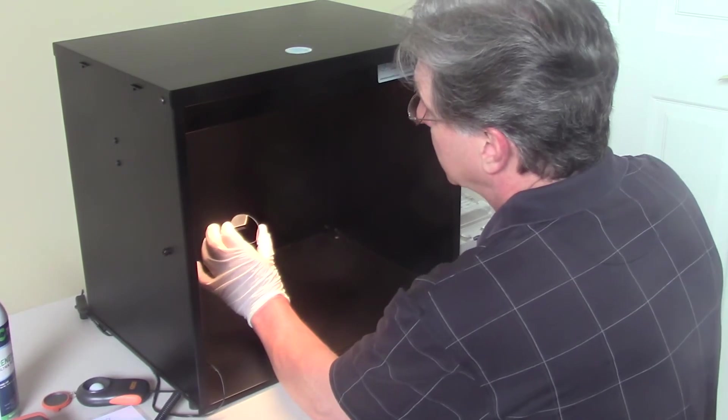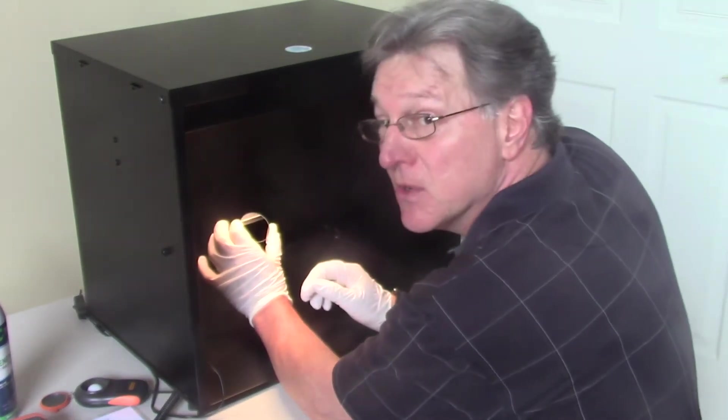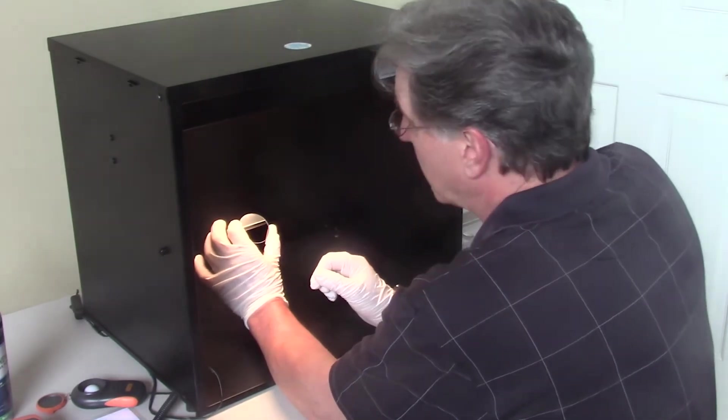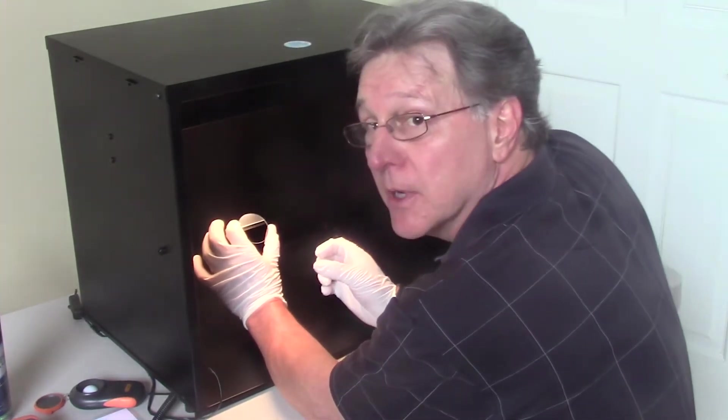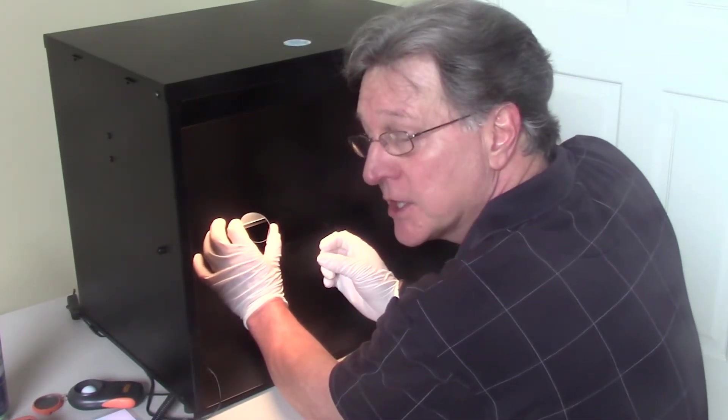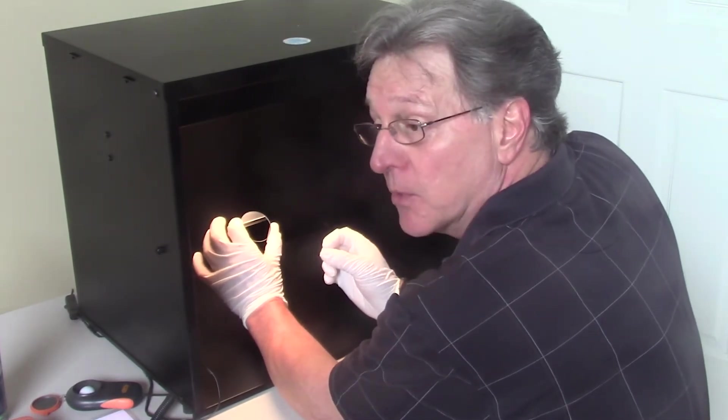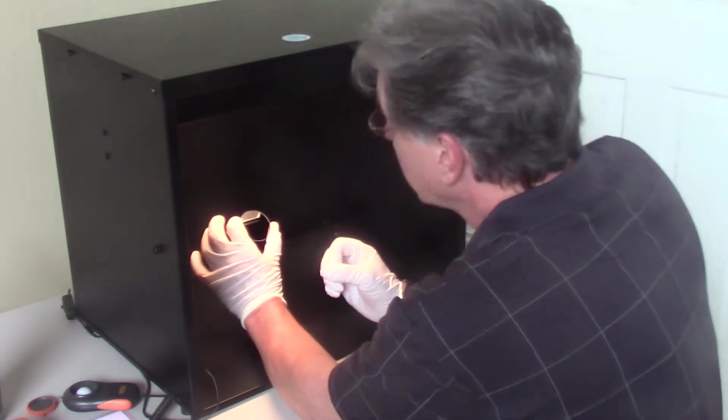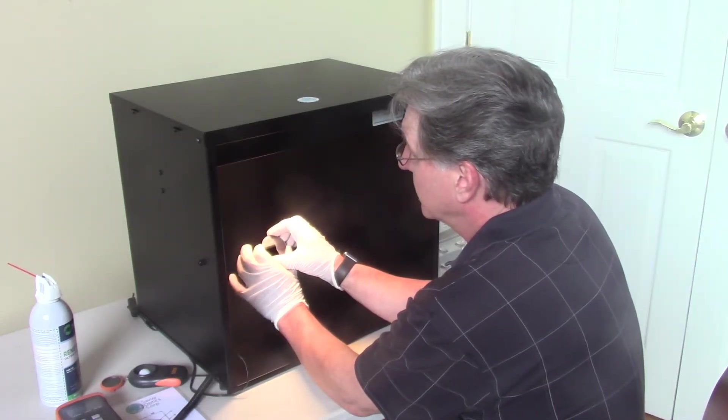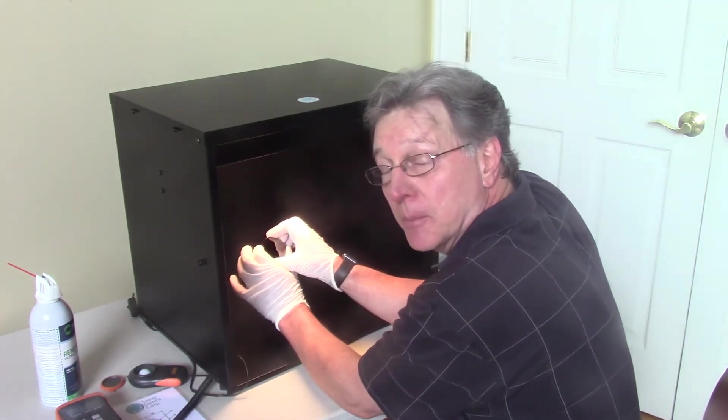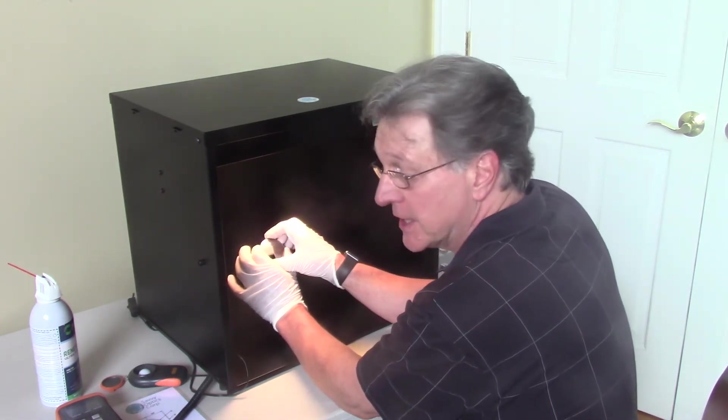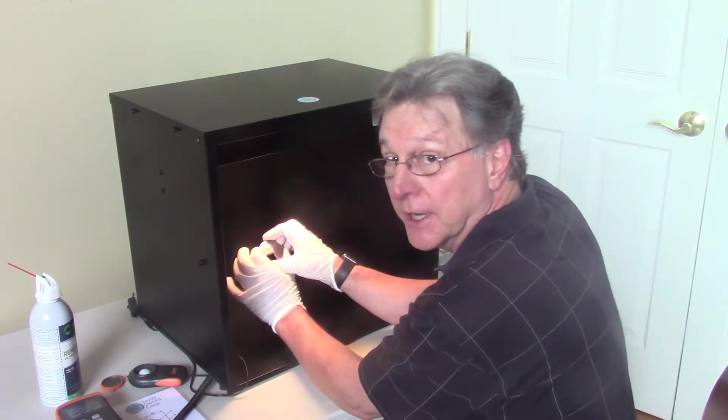I can visually estimate that scratch length at about 6 millimeters. If the specification were 80-50 and I was only allowed a quarter of a diameter of a number 80 scratch, I might go ahead and measure that with a ruler and even use a loupe to check its length. I can see that the scratch is short with respect to the diameter of the part, so I don't need to make any careful measurement.